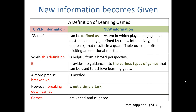It will be useful to look at this notion of given and new information pattern in a longer text, and to see how new information becomes given information. We have here a definition of learning games, which is a fairly typical piece of academic writing. A game can be defined as a system in which players engage in an abstract challenge, defined by rules, interactivity, and feedback that results in a quantifiable outcome, often eliciting an emotional reaction.